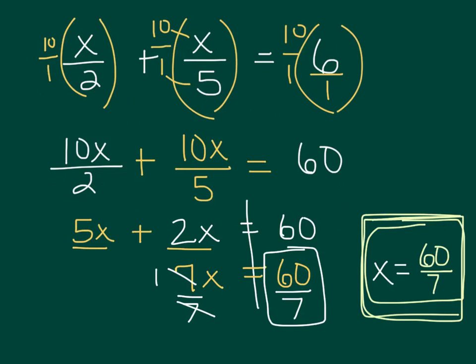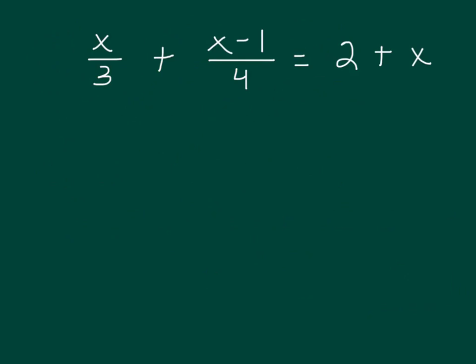Alright, we're going to try another one. Please go ahead and copy this one down. We have x over 3 plus x minus 1 over 4 equals 2 plus x. First thing is we need to look at the denominators. We have a 3 and a 4. Over here, there's nothing under the other terms, so those are just 1s. So I really need to look at 3 and 4 — I want to get rid of these fractions.